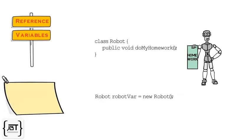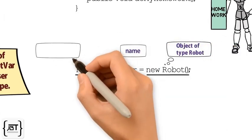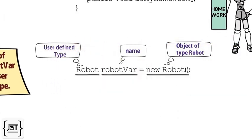Robot is a class, or we can say, it is a user-defined type. The name of the variable is RobotVar, and it points to an object of type Robot.